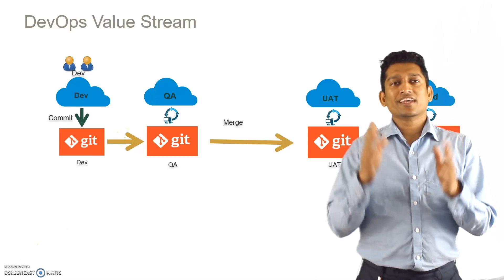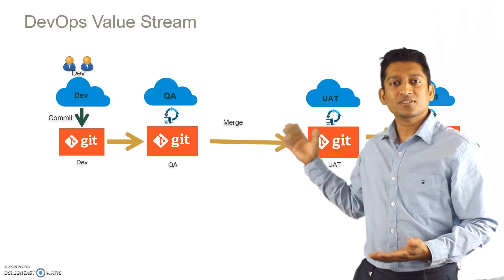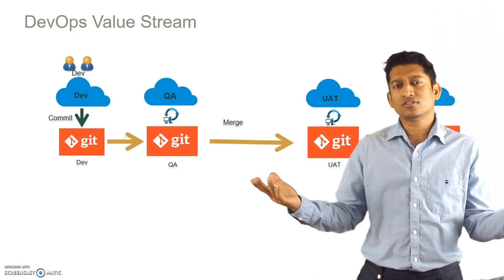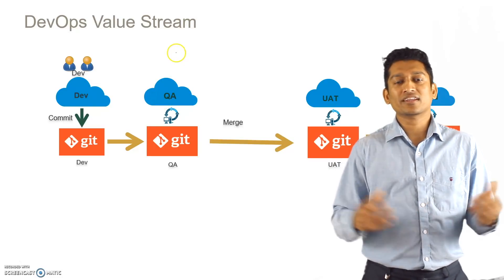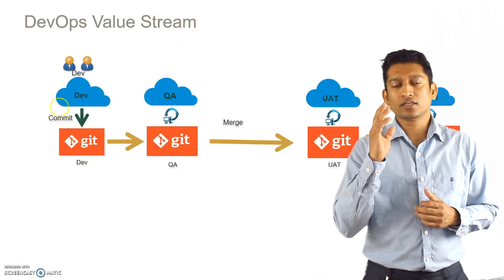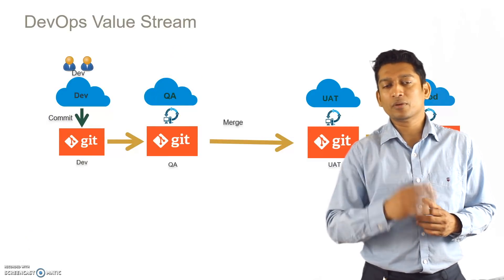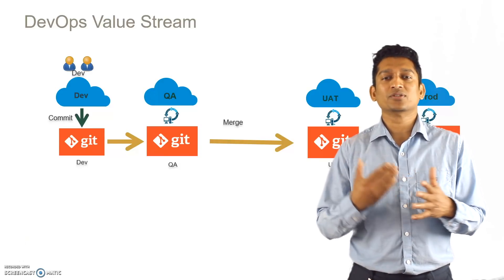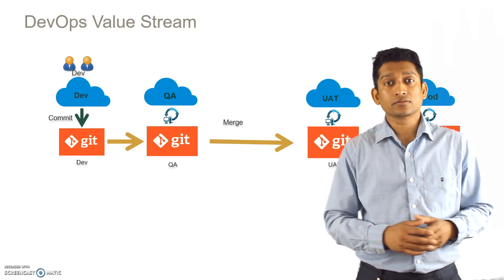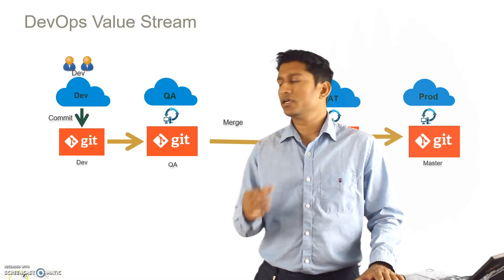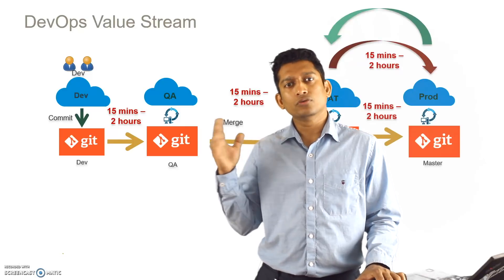Looking at this picture it always makes me curious — it's so short, there's not much distance between each environment, and it looks like DevOps could be cute with not many activities, but it's too good to be true. From a CIO standpoint this may be a good view, but a developer, an ops person, or a DevOps engineer would directly know what's involved. How much time do you think each of these steps would take? Each of them currently takes 15 minutes to two hours.